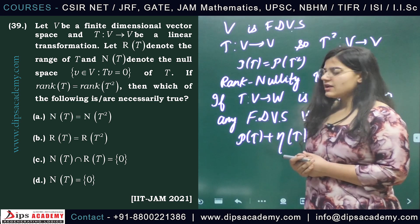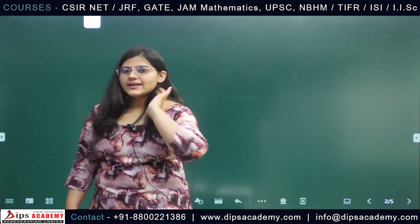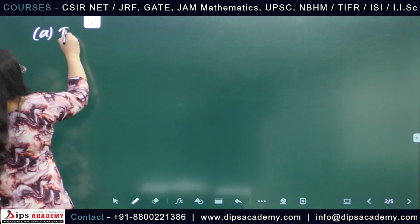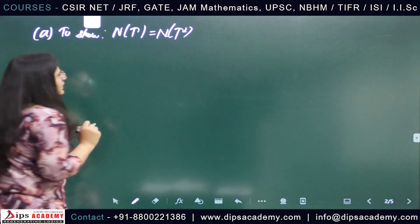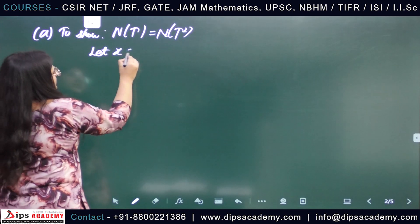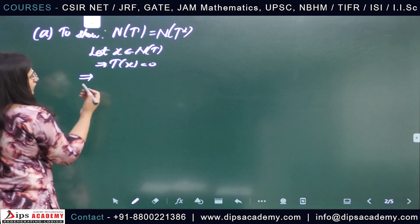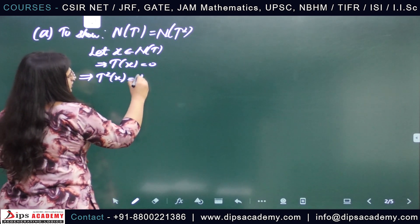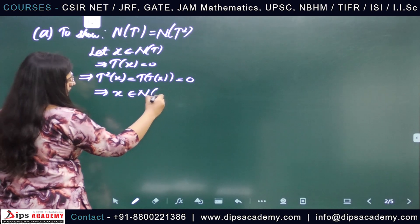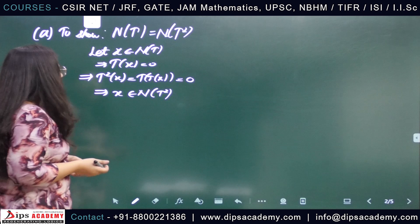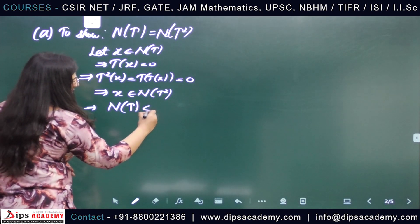This is a multiple correct question, so we have to discuss all options. Let's start with the first option. Option A states that nullity of T equals nullity of T squared. To show this, let us take an arbitrary element X of the null space of T. This implies T of X equals zero, which implies T squared of X equals T(T(X)) equals zero, so X belongs to the null space of T squared. Since X was arbitrary, null space of T is a subset of null space of T squared.